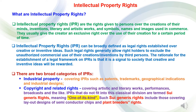There are two broad categories of intellectual property rights. The first one is industrial property, which covers intellectual property rights such as patents, trademarks, geographical indications and industrial designs. The second one is copyright and related rights, which covers artistic and literary works, performances, broadcast, and so on. Intellectual property rights that do not fit into this classical division are termed as sui generis rights, which means one of its kind. Indian intellectual property rights related to agriculture fall under sui generis rights, and these rights include covering layout designs of semiconductor chips and plant breeders rights in agriculture.